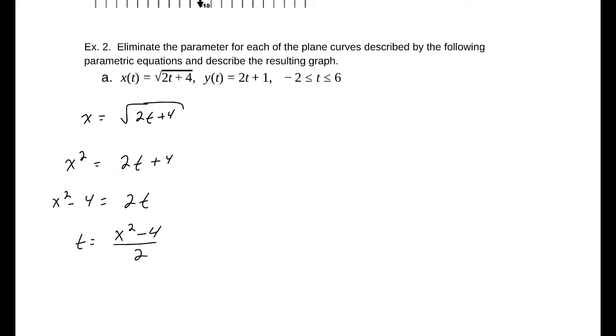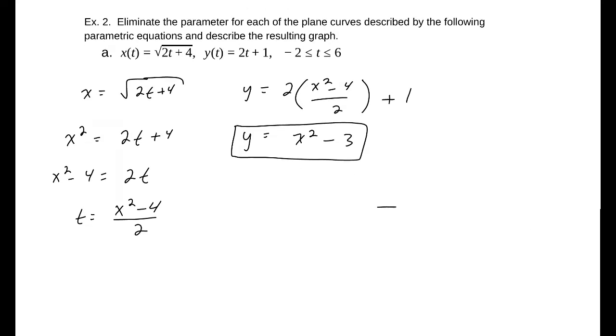I've just isolated my t. And when I go back to my y of t, that is 2t plus 1. Replacing my new value of t in terms of x, x squared minus 4 over 2. The 2s will reduce, so I'll get x squared minus 4 plus 1. So x squared minus 3 is my equation without a t, just in terms of y and x. This would be a parabola opening up.